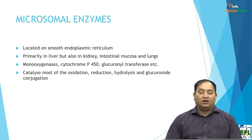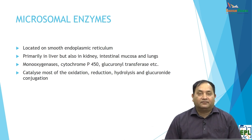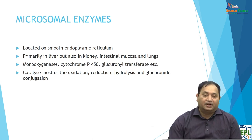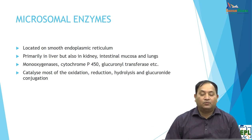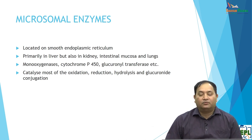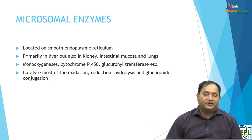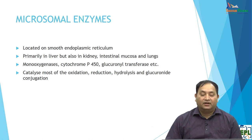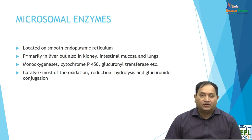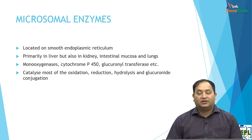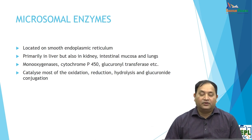Let us also discuss microsomal enzymes. Microsomal enzymes are located in the smooth endoplasmic reticulum and are found primarily in the liver, but also in the kidney, intestine, intestinal mucosa, and lungs. These include the monooxygenases — cytochrome P450 — and glucuronyl transferases. Basically, they catalyze oxidation, reduction, hydrolysis, and glucuronide conjugation, which helps in detoxifying toxic compounds and drugs.